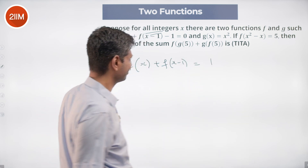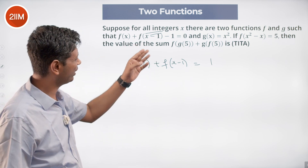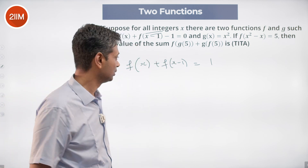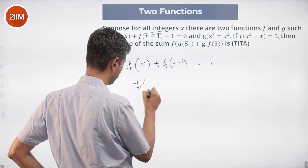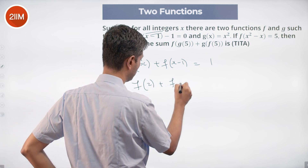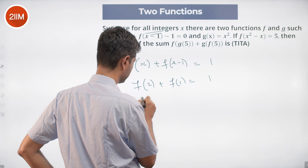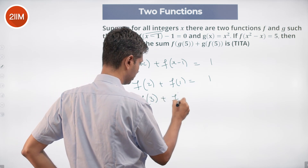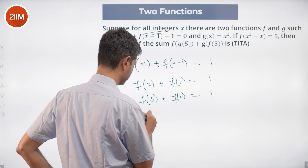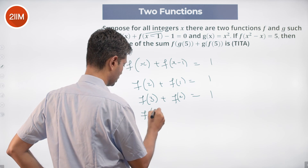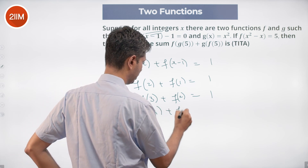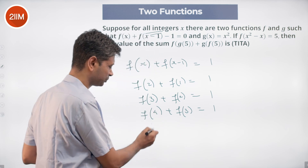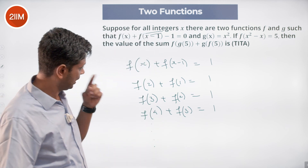We know g(x) = x², that's straightforward. Now I'm going to write a few equations: f(2) + f(1) = 1, f(3) + f(2) = 1, f(4) + f(3) = 1, and so on.